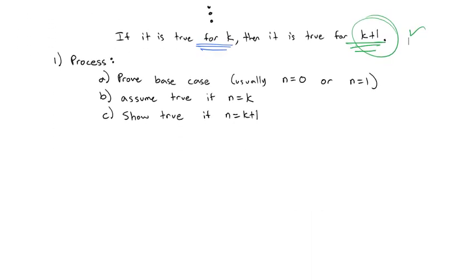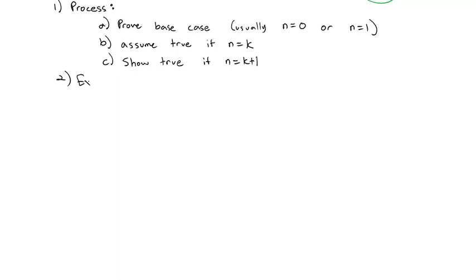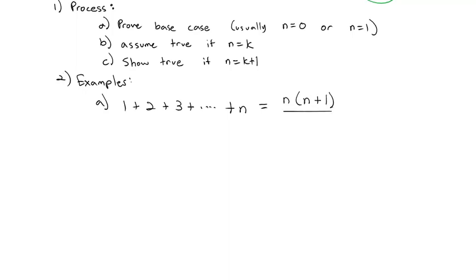Let's take a look at what this process actually looks like by doing some examples. All of these examples are going to work exactly the same in process, but that last step where we're showing it's true might require different algebraic tricks and manipulation. For example, one series we know is 1 plus 2 plus 3 plus all the way up to some largest number n. We know, because that's an arithmetic series, we have the formula n times n plus 1 divided by 2. We're going to prove that.